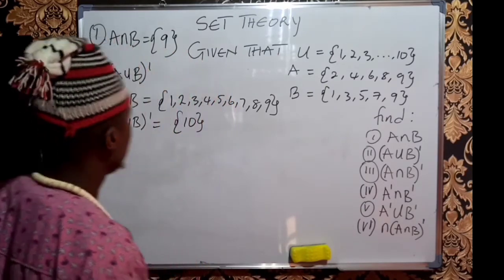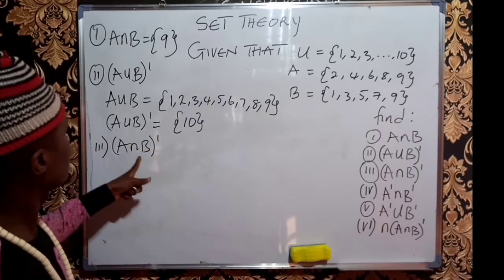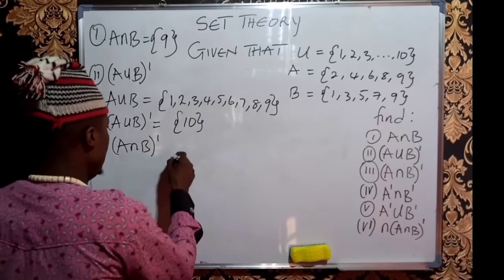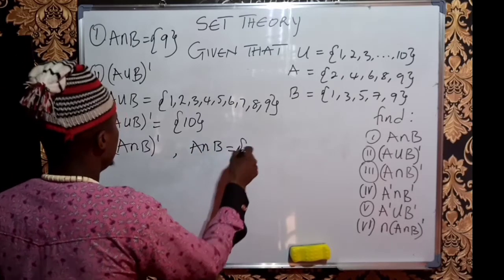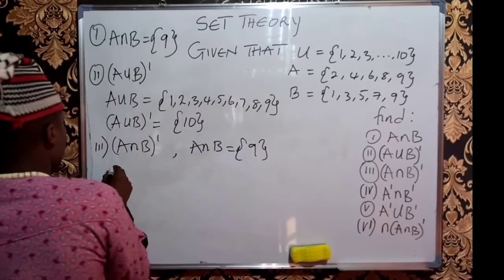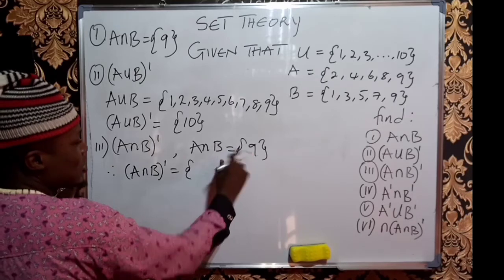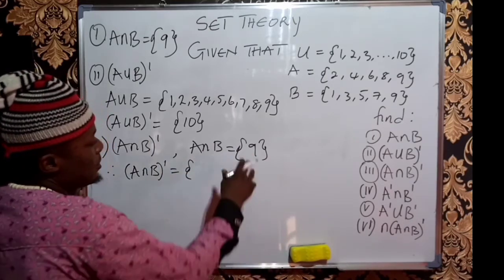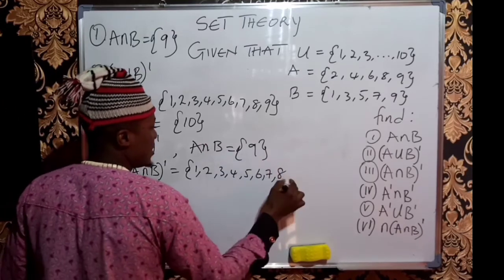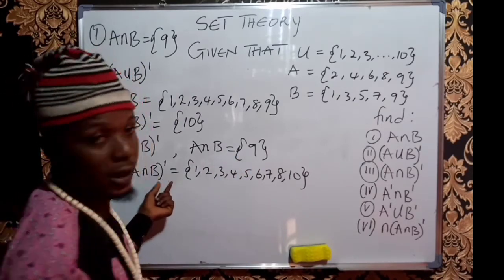The next one is (A ∩ B)'. We need to first get A ∩ B before we talk about the complement. A ∩ B is just 9 — the element common to both sets. Therefore, for (A ∩ B)', this set has only 9, so it needs a lot of elements to be complete. There is no 1, 2, 3, 4, 5, 6, 7, 8, or 10. All these elements need to come into this set before it becomes complete — that is what we mean by (A ∩ B)'.